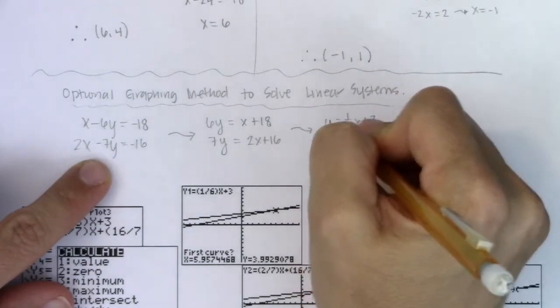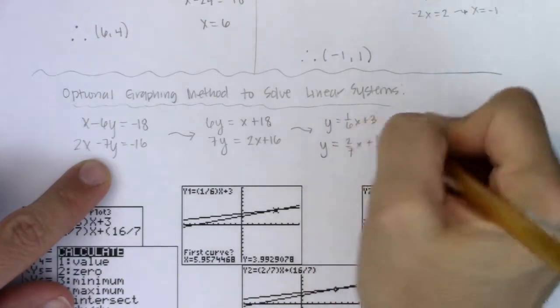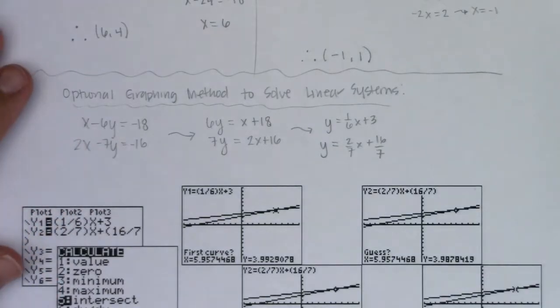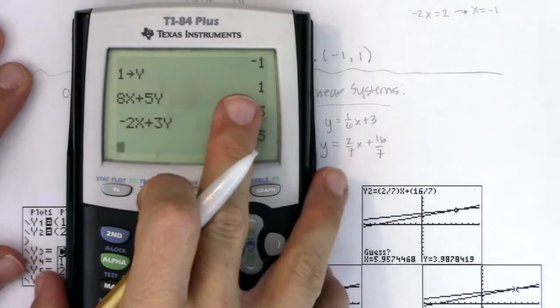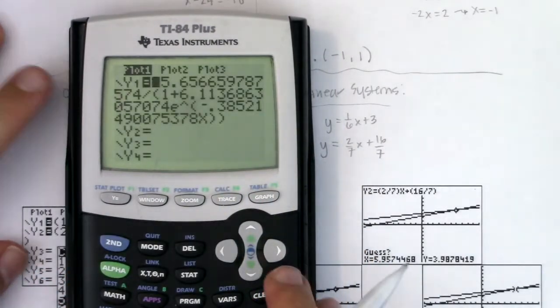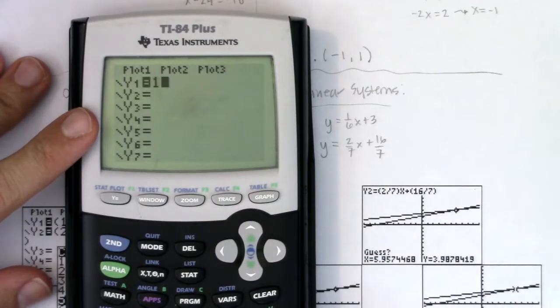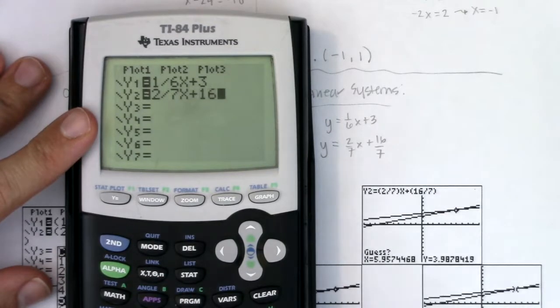And here I will get y is equal to 2 sevenths x plus 16 sevenths. Alright. You can see there's a good chunk of work involved if you want to do this method. But what you can do then is your calculator can take that mx plus b. It looks like we were having some logistic growth last time here. Let me clear that out. You can put your first equation into y1. You can put your second equation into y2.